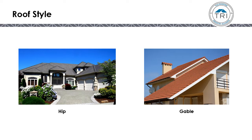The big difference between the old manual and the new 6th edition FRSA TRI high wind manual is different types of roof style. The old manual had one style roof. The new manual separates the tables into hip roofs and gable roofs.